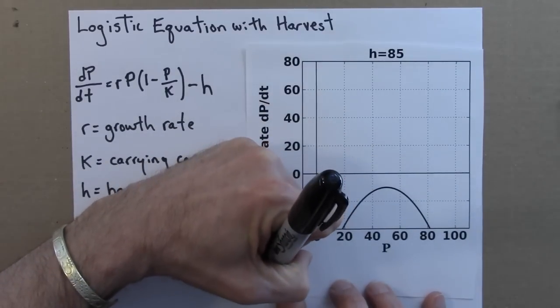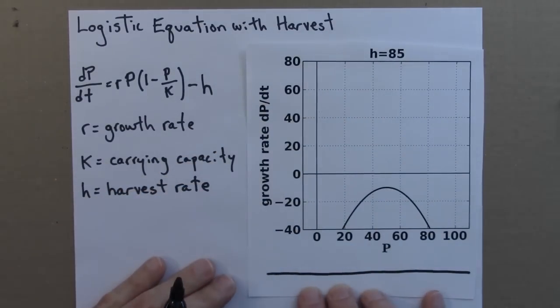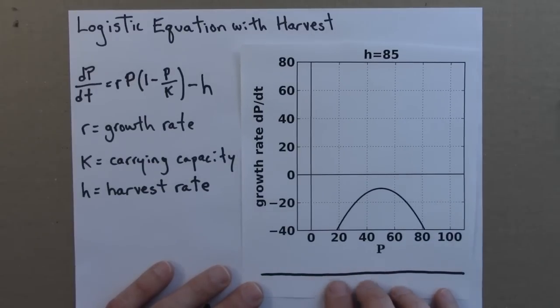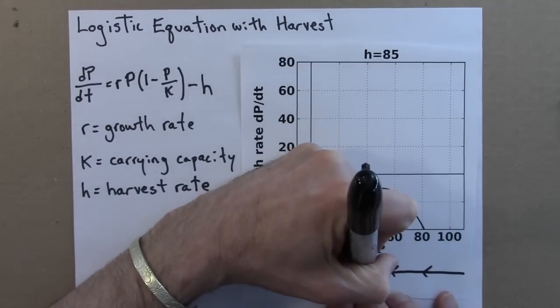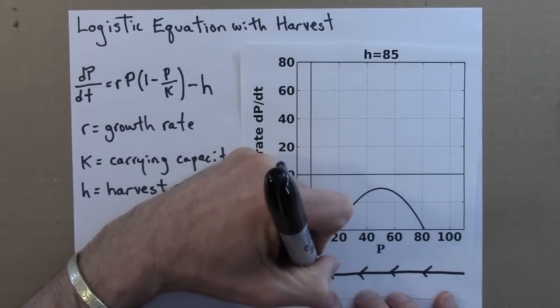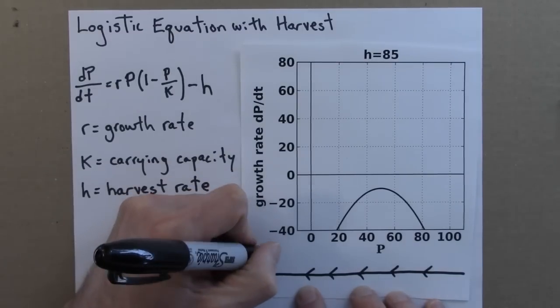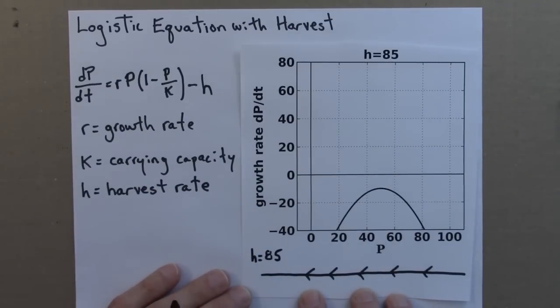So I can draw this phase line. I put no dots on this phase line because there are no fixed points, no equilibrium points. Just arrows indicating that no matter what the population is, it's always decreasing. And I'll make a note that this h value, the parameter h, is 85.